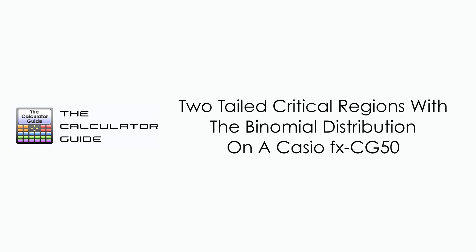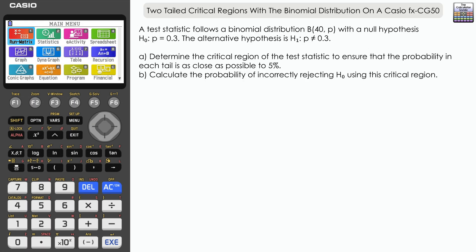Hello and welcome to the calculator guide video on two-tailed critical regions with the binomial distribution on a Casio fx-CG50. We're going to use the distribution app to find critical regions where there are two tails using the binomial distribution.